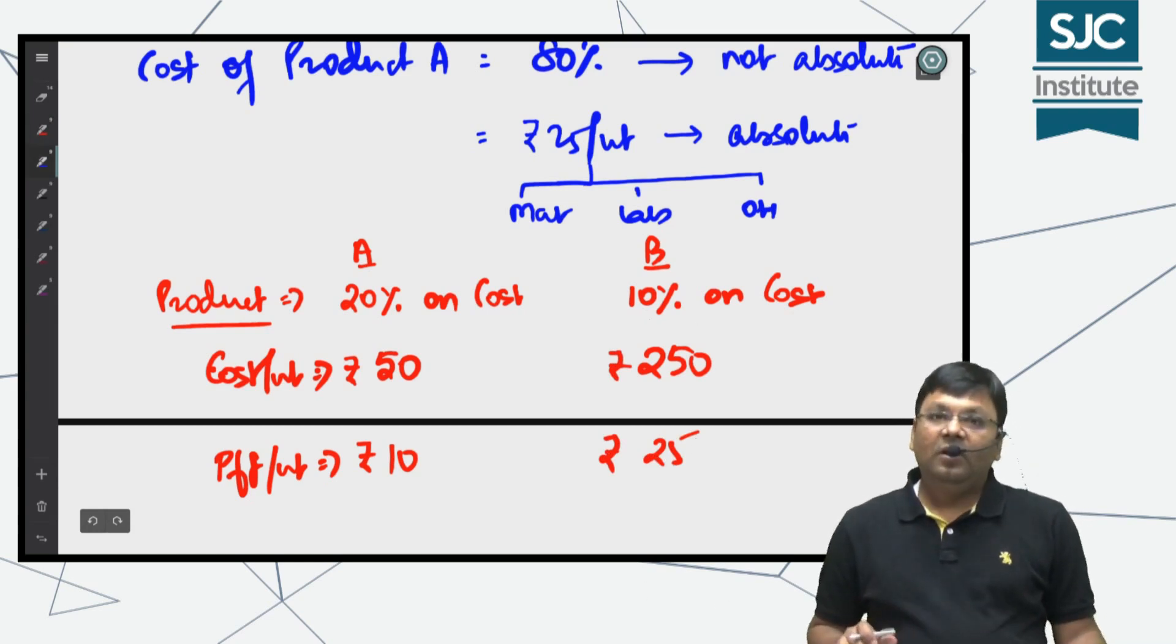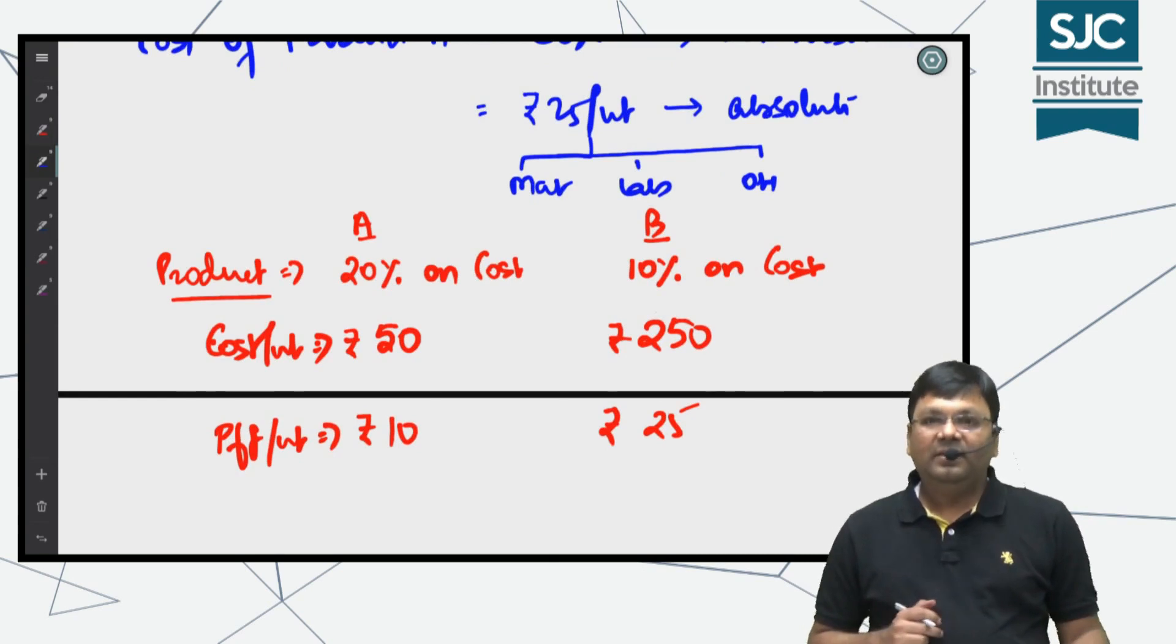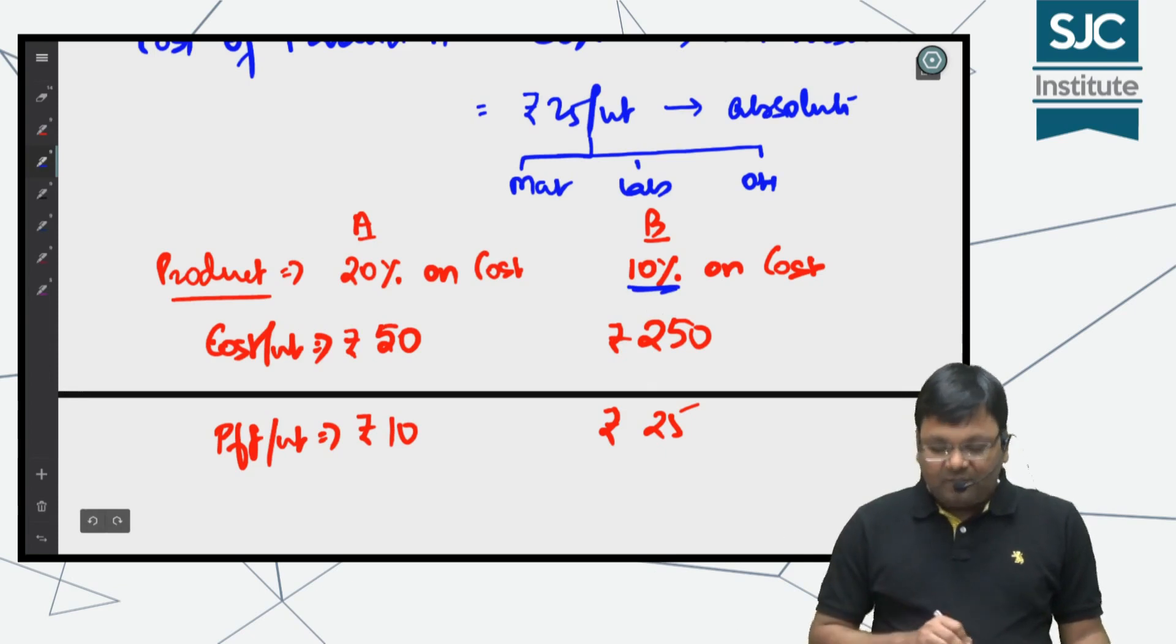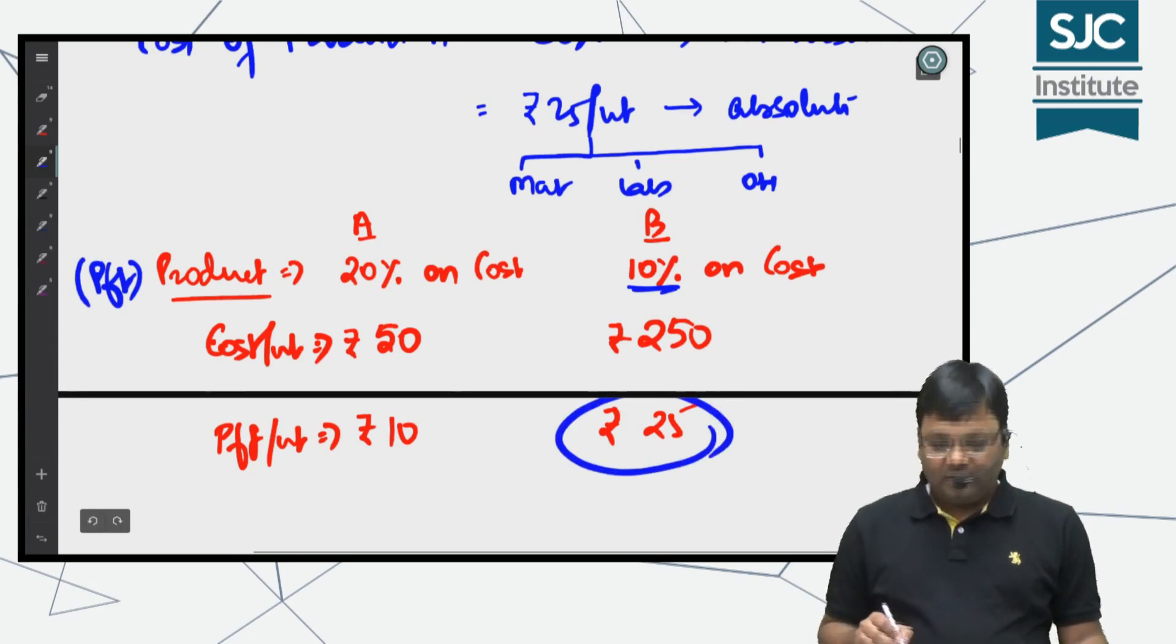The point is, in business we focus more on absolute income rather than percentage income. Product B has 10% profit, but in absolute terms it's 25 rupees. Product A has 20% profit, but in absolute terms it's less.